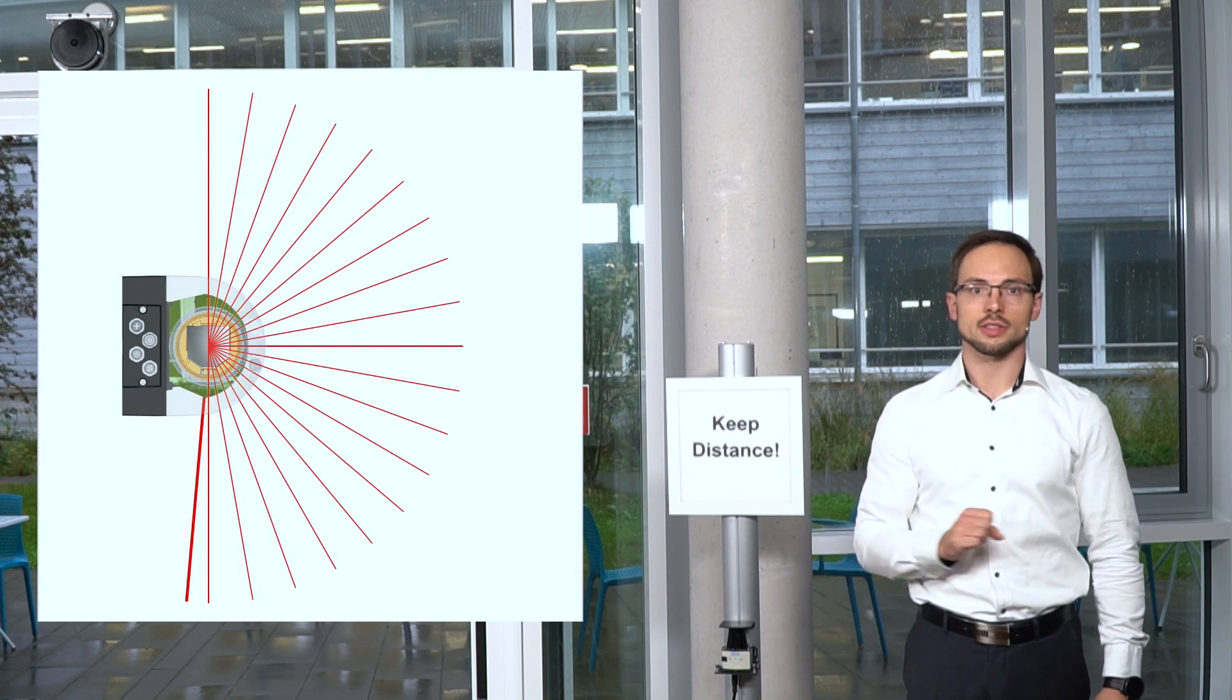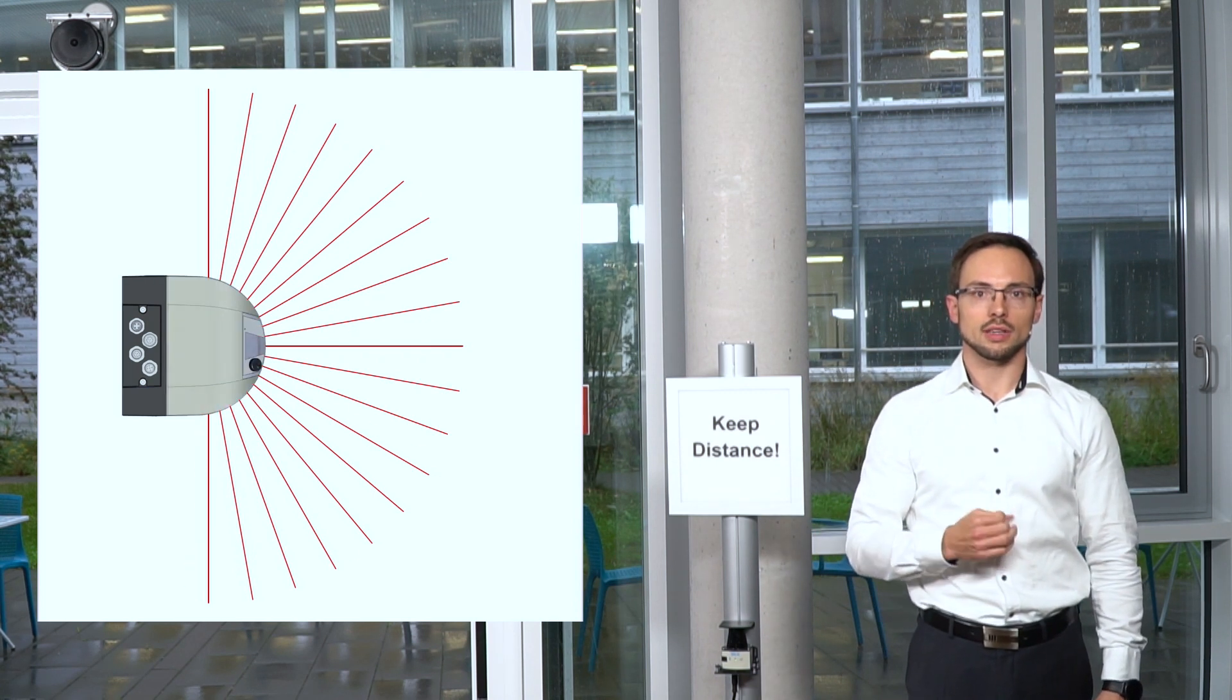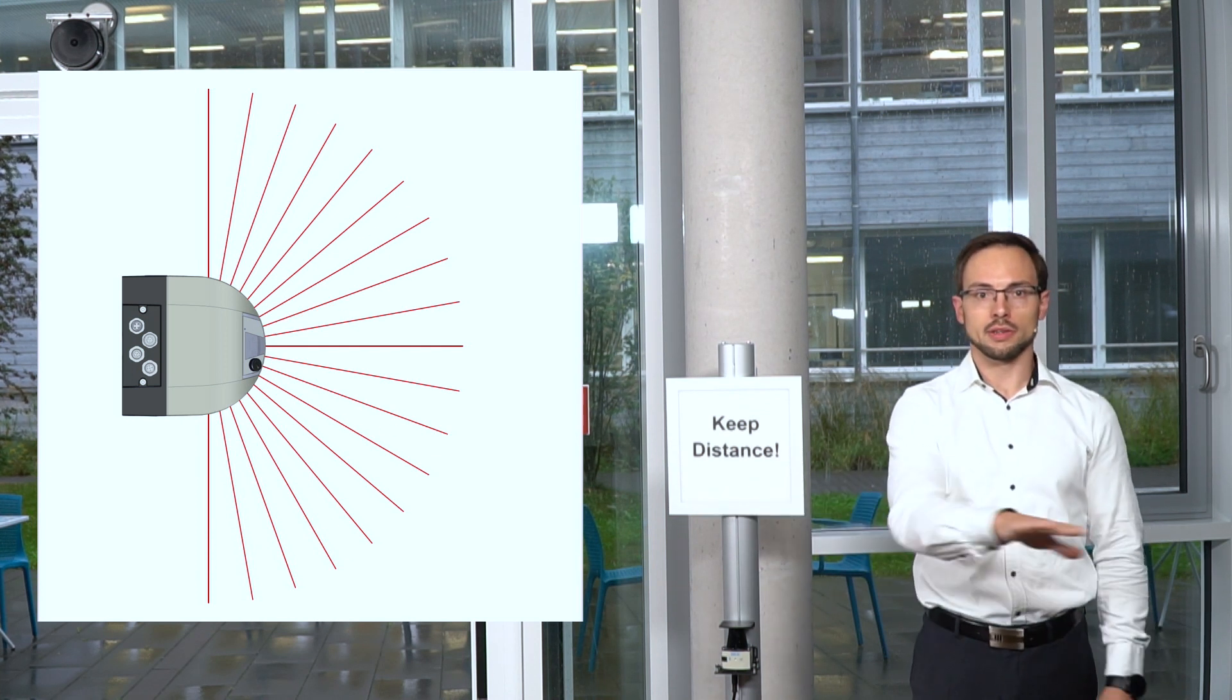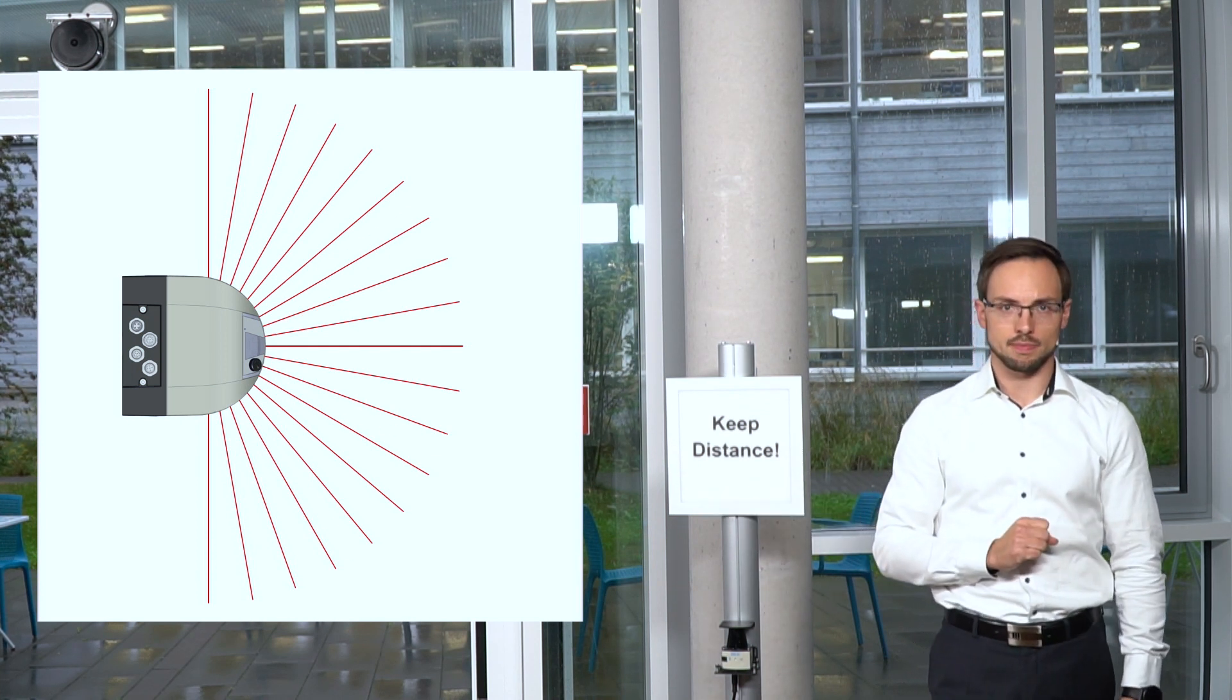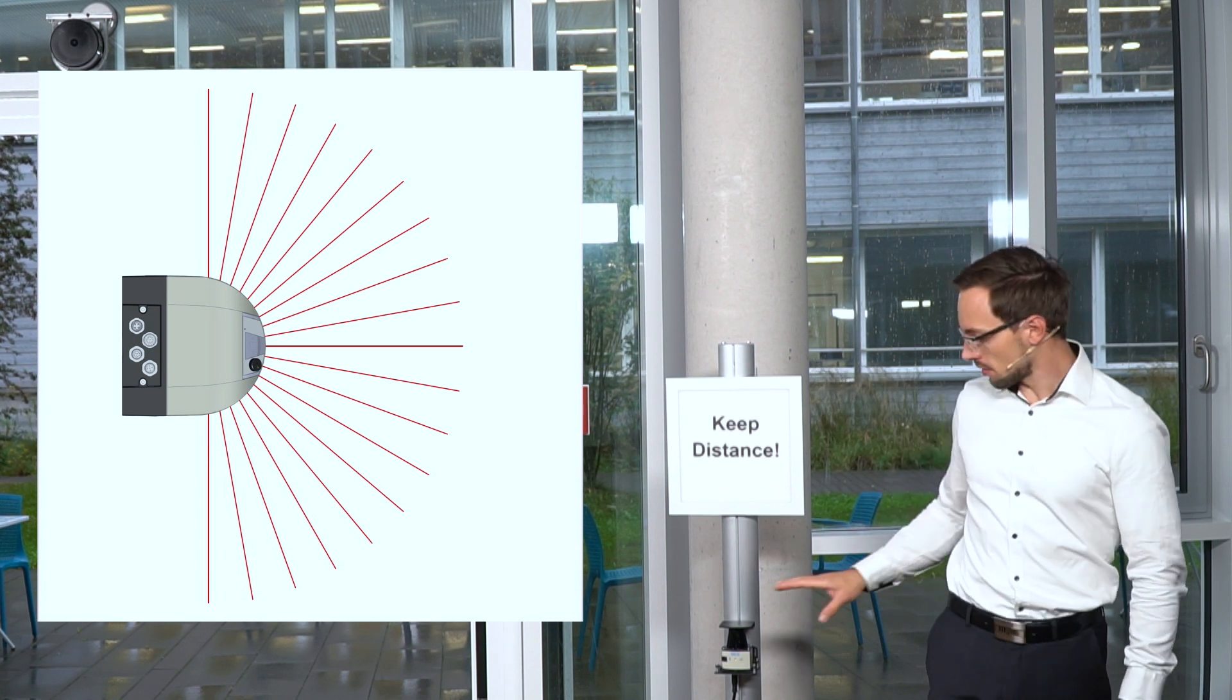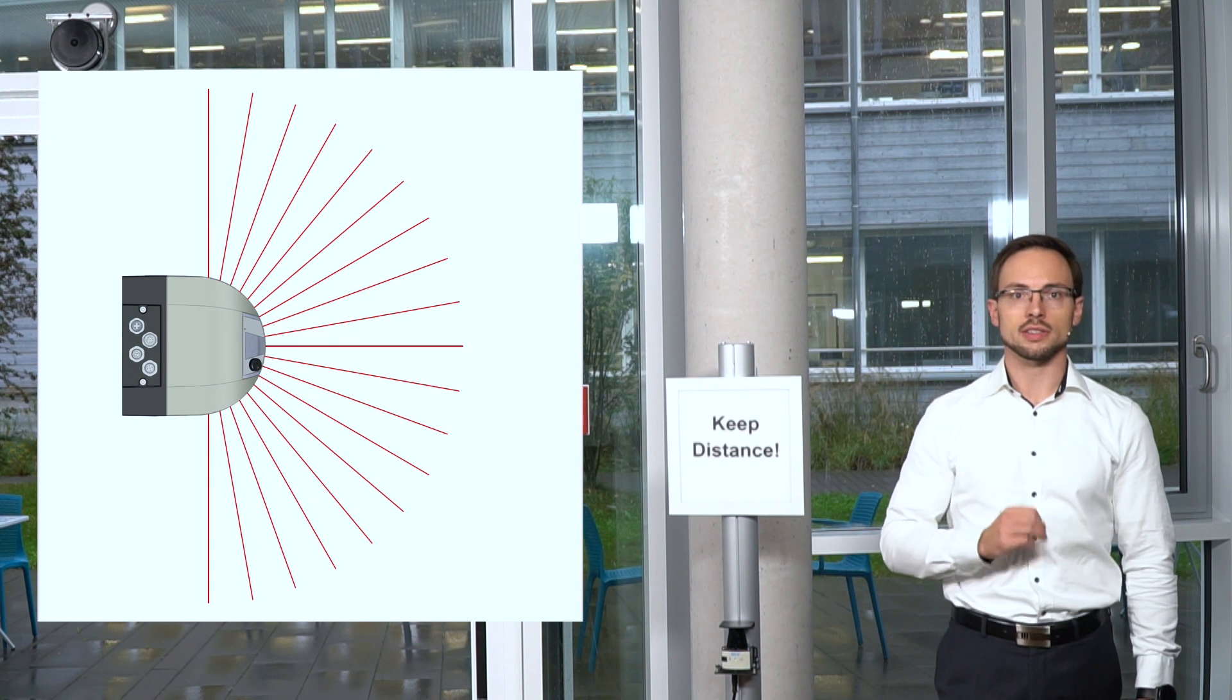When you now rotate this laser you will get a very good idea of the whole room in this one plane where the device is measuring. Sometimes you have not only one plane as in this 2D LiDAR sensor but several planes.